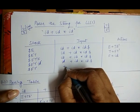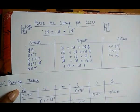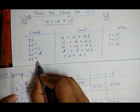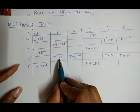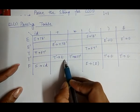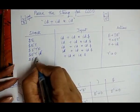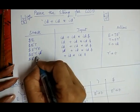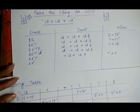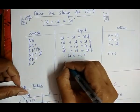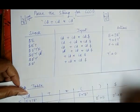Now the top of the stack is T' and the terminal is plus. From the table, T' on seeing plus: the production is T' → ε. So T' derives epsilon — T' vanishes. The stack now contains: dollar, E', and the input is: plus id into id dollar.